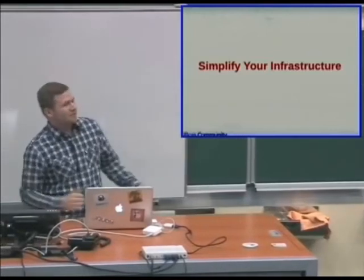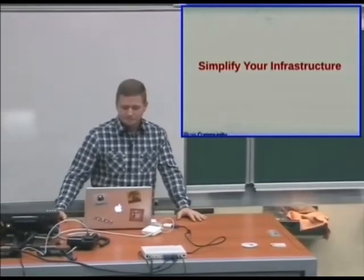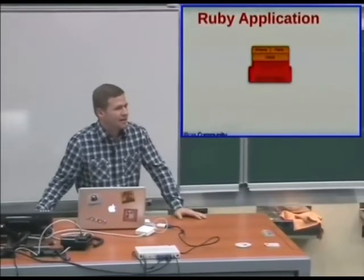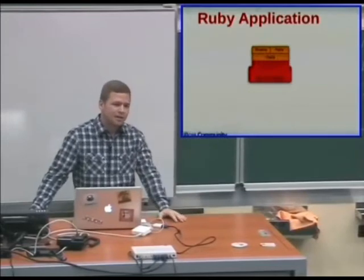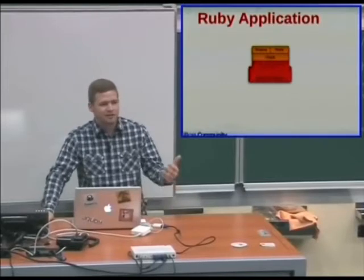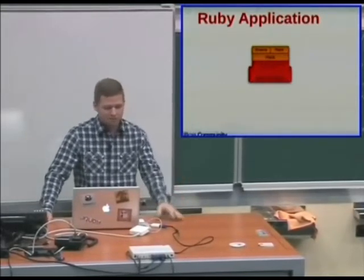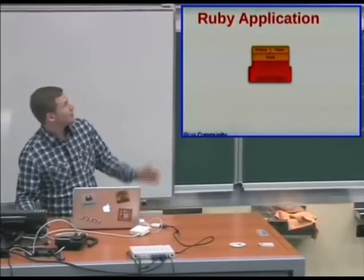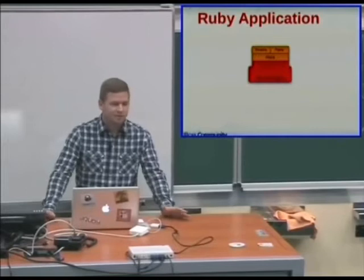How can a server simplify your infrastructure? Your typical Ruby application starts out maybe running on Passenger or Thin. Maybe you're hosting it on EC2, or on a box in a data center, or on your local machine, or on a platform as a service. Your Rails, Sinatra, or Rack app starts out as a very simple application.